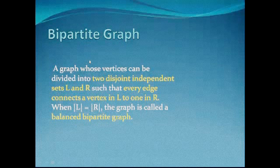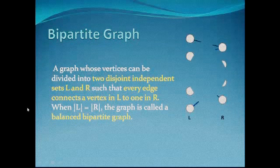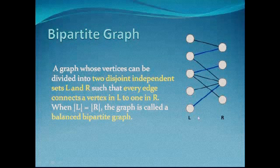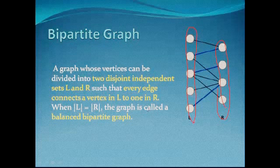There is also a special kind of graph called a bipartite graph. This is a graph whose vertices can be divided into two disjoint sets L and R, where every edge connects a vertex in L to one in R. When the number of vertices in L equals the number in R, we say the graph is a balanced bipartite graph. In this demo, all edges must have one vertex in the left set and one in the right set — we can never find an edge connecting two vertices within the same set.